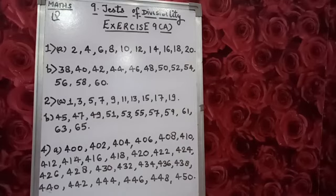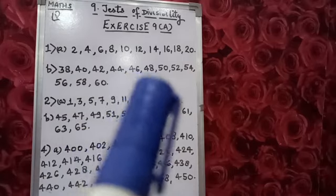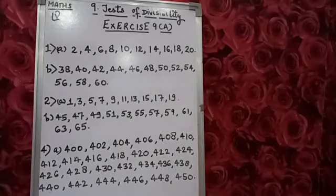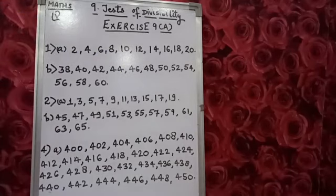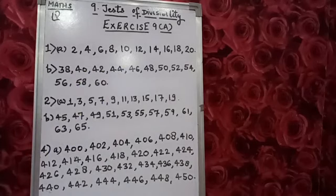Now let's see part B: 38 to 60. We have to write all the even numbers lying between 38 to 60. They are: 38, 40, 42, 44, 46, 48, 50, 52, 54, 56, 58, and 60. As you can see, in parts A and B, on all the ones places, even numbers are there — that is 2, 4, 6, 8, and 0.